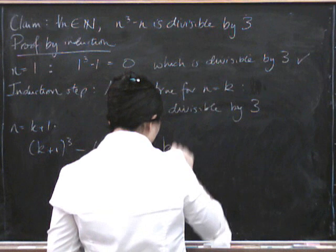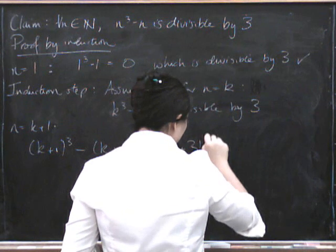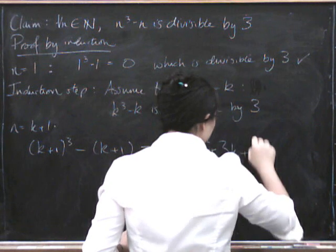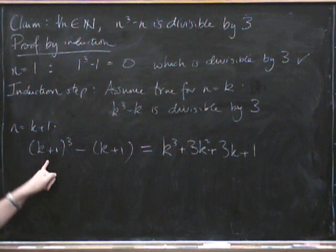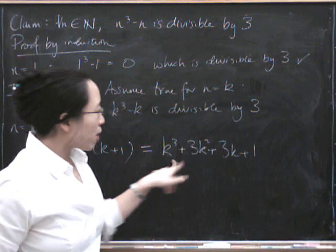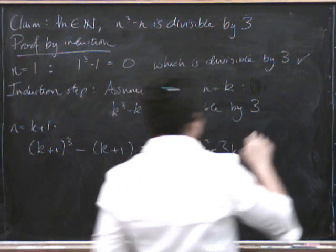It's k cubed plus 3k squared plus 3k plus 1. Remember, when you expand a cubic, you get 1, 3, 3, 1 as your coefficients from Pascal's triangle. So that's the first bit.